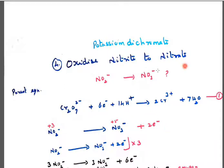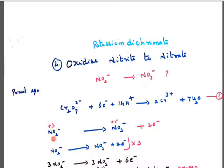Next, potassium dichromate oxidizes nitrite to nitrate — that is, NO₂⁻ to NO₃⁻. First, write the parent equation: Cr₂O₇²⁻ + 6e⁻ + 14H⁺ → 2Cr³⁺ + 7H₂O. Now find the oxidation state of nitrogen in NO₂⁻: 2 into minus 2 is minus 4, so minus 4 plus 1 gives plus 3. The oxidation state of nitrogen in NO₂⁻ is plus 3.